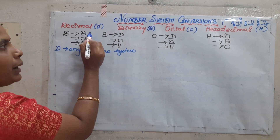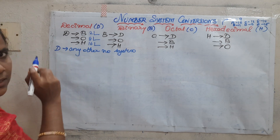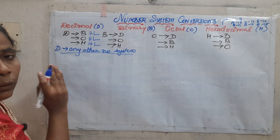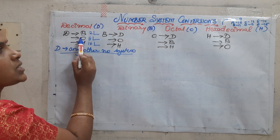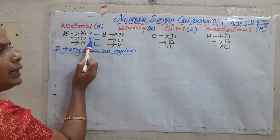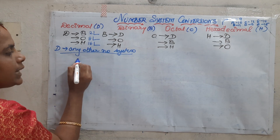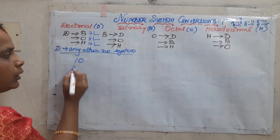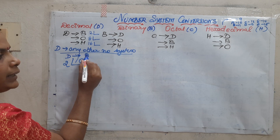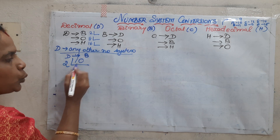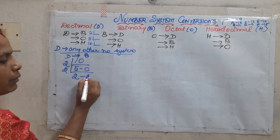You know the radix or base of binary is 2, for octal it is 8, for hexadecimal it is 16. The general rule is: to convert from decimal to any other number system, just divide successively by its radix. If you want octal divide by 8, if you want hexadecimal divide successively by 16. Now we will take a small example — 10. To convert from decimal to binary, just successively divide by 2 because the target is binary and its radix is 2. So 5 twos are 10.